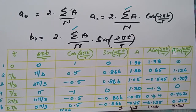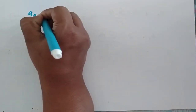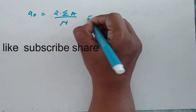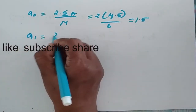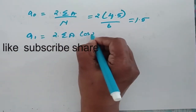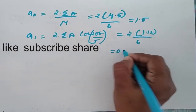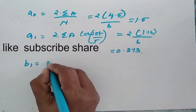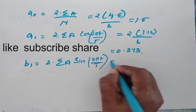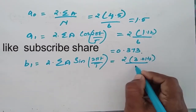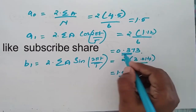Substituting these values: a₀ = 2 × (summation of a)/n = 2 × 4.5/6 = 1.5. Then a₁ = 2 × (summation of a·cos(2πt/T))/6 = 2 × 1.12/6 = 0.373. And b₁ = 2 × (summation of a·sin(2πt/T))/6 = 2 × 3.014/6 = 1.005.